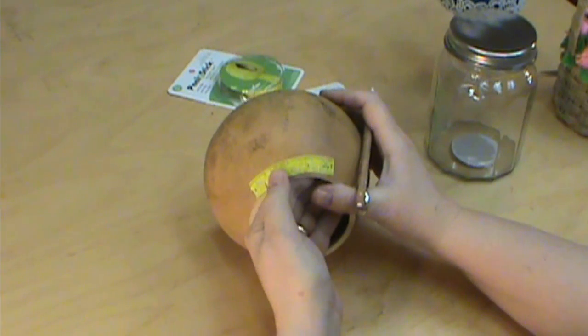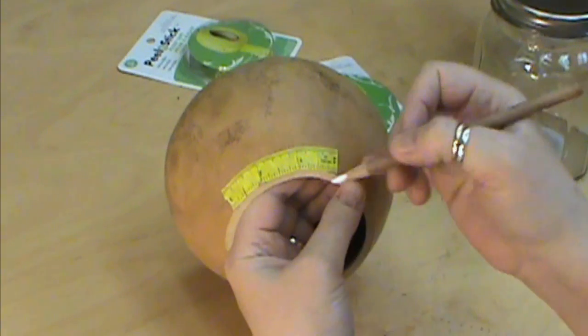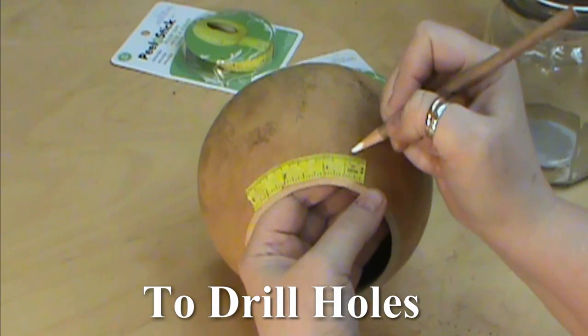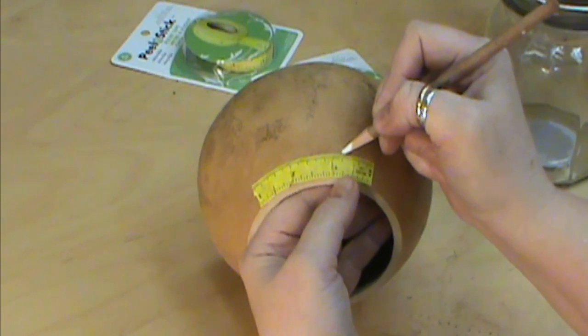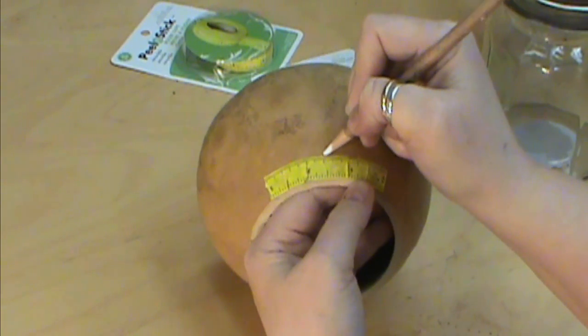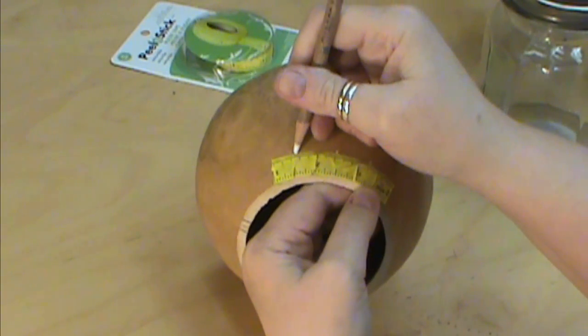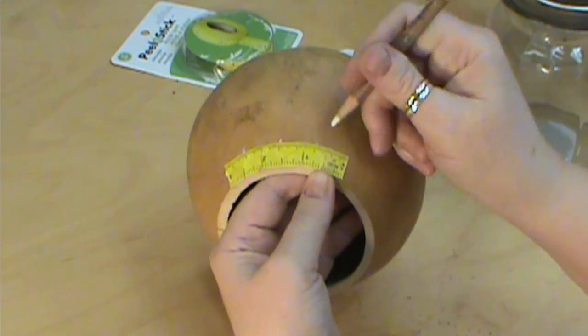Once you've got your rim put on and you wanted to do a rim with beads or pine needles you can measure it off. My main one is usually three to four inches so that's a nice one to figure out with this one or however far you want to do it apart.